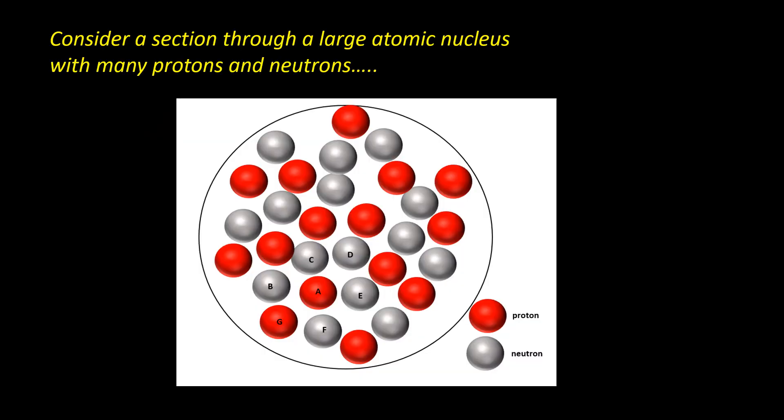Consider a large nucleus, such as the one shown here, then imagine a single proton, which we're going to mark with A. This proton is only attracted to its neighboring nucleons, so that's B, C, D, E, F and G, by the nuclear force. The other nucleons in the nucleus will be too far away to have any significant attractive force on proton A.